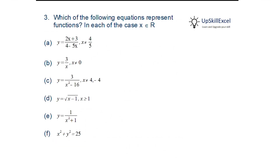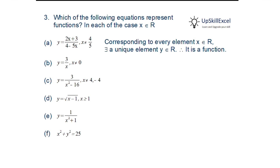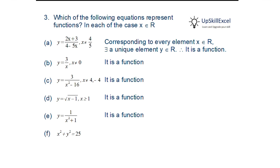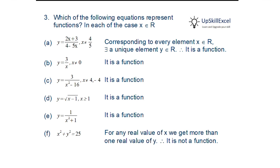Which of the following represents a function? For any given x, we must find a unique y. For y = (2x+3)/(4−5x), x is not defined at 4/5, but for any other x we get a unique y — so this is a function. Similarly, cases B, C, D, and E each give a unique y for any x. But x² + y² = 25 represents a circle, and for each x we get more than one y — so this is not a function.